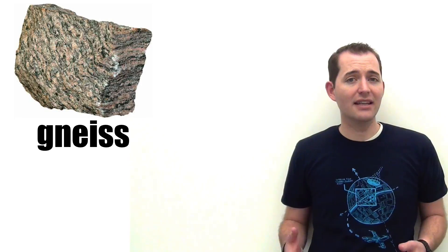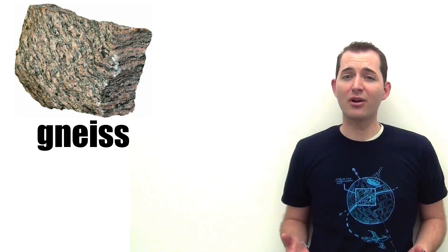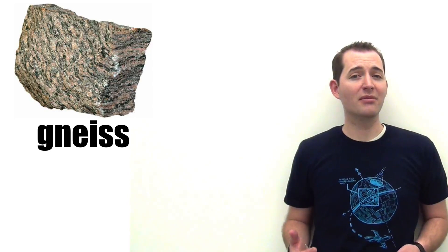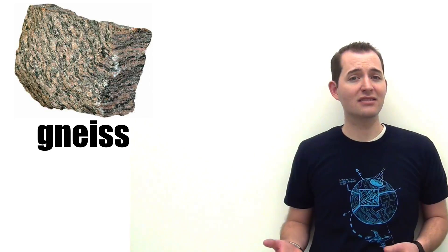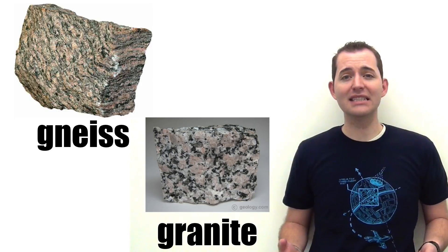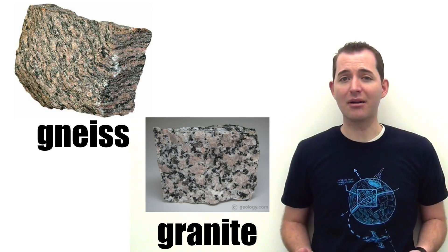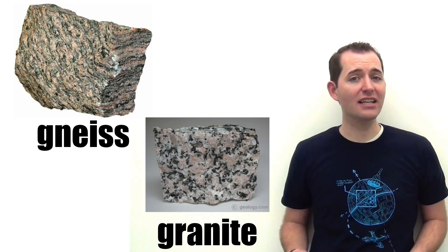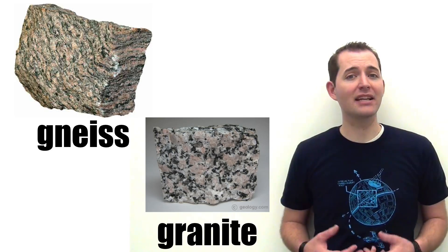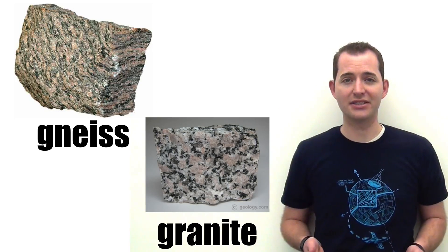Let's take a look at a few examples of metamorphic rocks. We will identify the name of the rock and the protolith, or the rock that it originally started as. First, let's look at gneiss. This is a metamorphic rock that typically comes from igneous rocks such as granite. As you can see in this example, the crystals of the igneous rock have been elongated to show foliation.